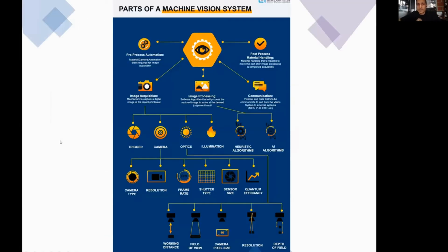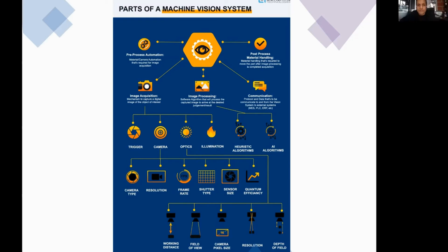What does it take to implement a quality control system in machine vision? There are a number of different parts you actually have to pay attention to — it's not only about software, not only about a camera. Sometimes it seems like it's all about the camera or all about the software, but there is a lot more to it than that.